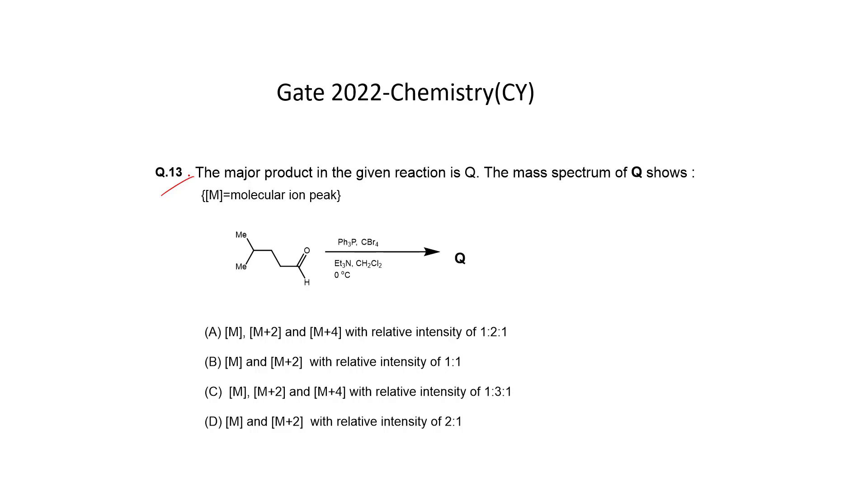So the reaction is: an aldehyde species reacting in presence of triphenylphosphine and tetrabromomethane in presence of a little amount of base, DCM as a solvent, at 0 degree centigrade, forming Q. The options are given in ratio of their isotopic peak.